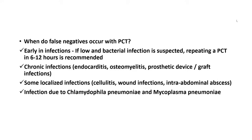Procalcitonin may also be lower while there is bacterial infection, causing false negative results. These may occur early in infections — if low procalcitonin is seen but bacterial infection is suspected, repeating the procalcitonin level in 6 to 12 hours is recommended. False negatives can also occur in some chronic infections including endocarditis, osteomyelitis, prosthetic device and graft infections, and some localized infections including cellulitis, wound infections, intra-abdominal abscess, and infection due to Chlamydophila and Mycoplasma pneumoniae.